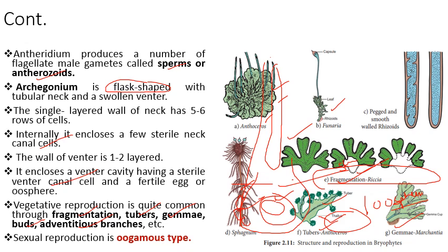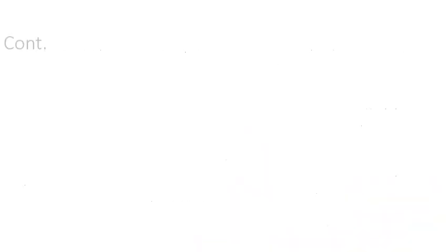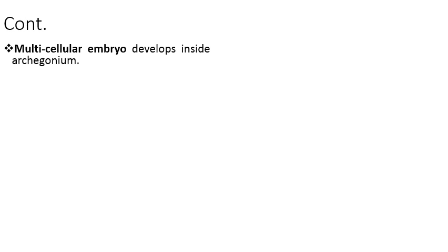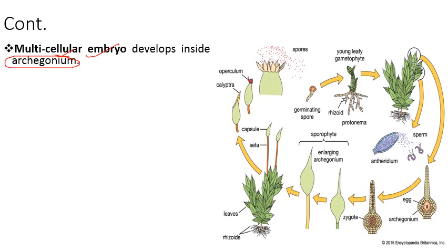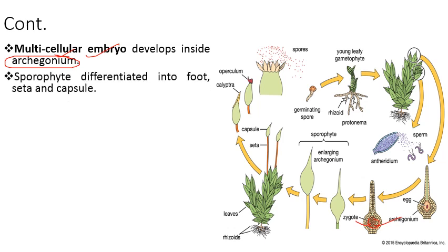Sexual reproduction is of the advanced oogamous type — the male gamete is smaller and motile while the female gamete is larger and non-motile. After sexual reproduction, a multicellular embryo forms and dwells within the archegonium — this is the first step towards seed habit. The zygote develops inside the archegonium base into an embryo, which then grows into the diploid sporophyte, differentiated into foot, seta, and capsule.